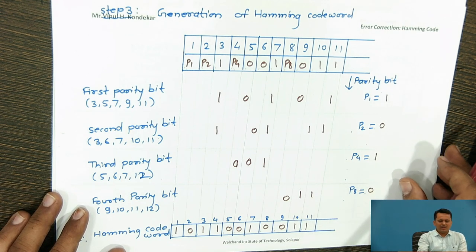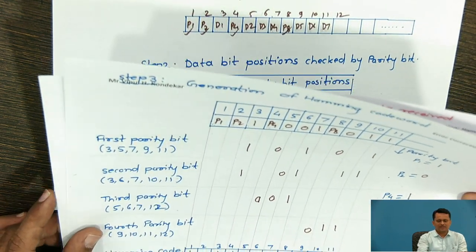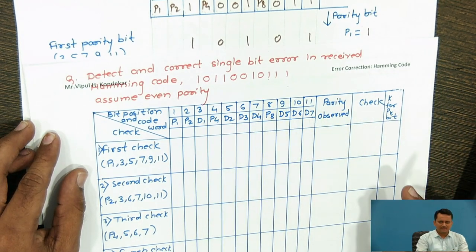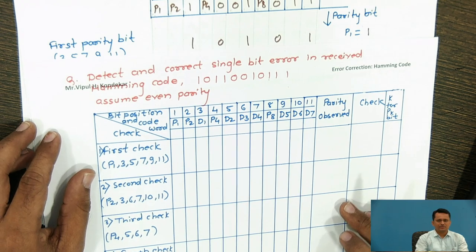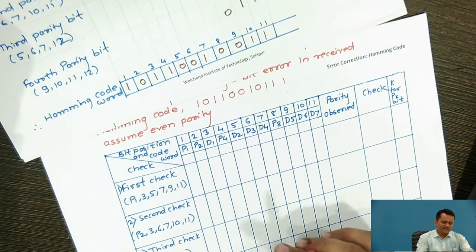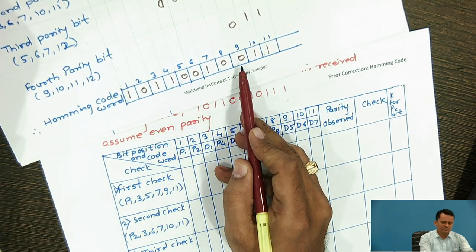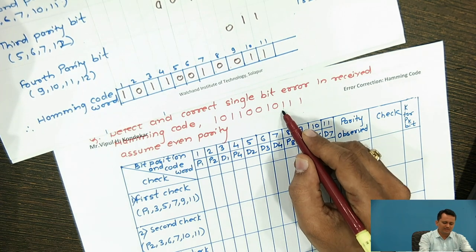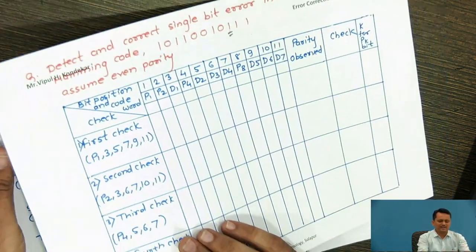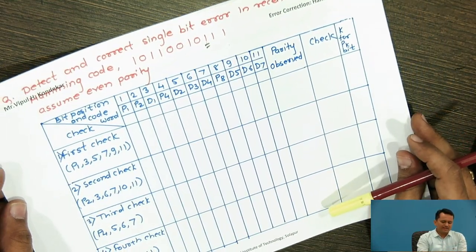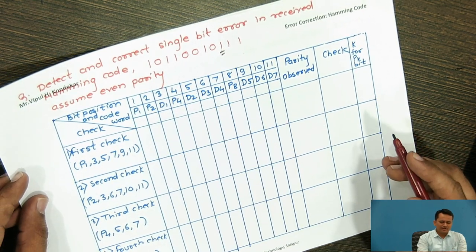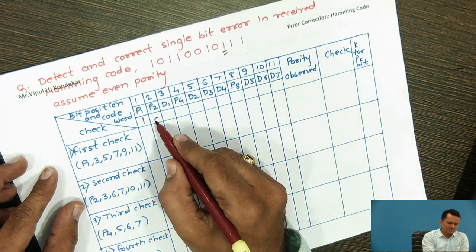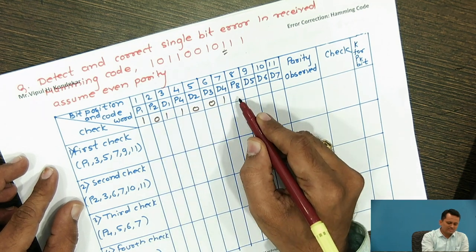Now, how can this Hamming code word be used for error correction? Suppose a single-bit error occurs during transmission. The transmitted data is 10110010011, but the data received is 10110010101 — a single-bit error has occurred. We will now understand how Hamming code can detect and correct that single-bit error by examining the received data.